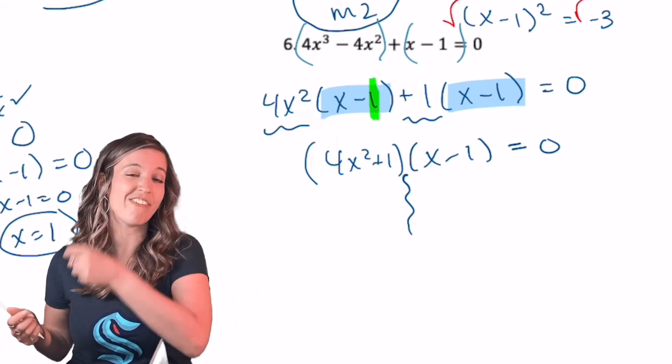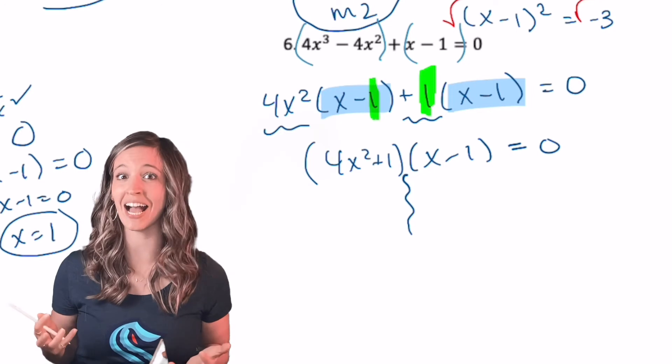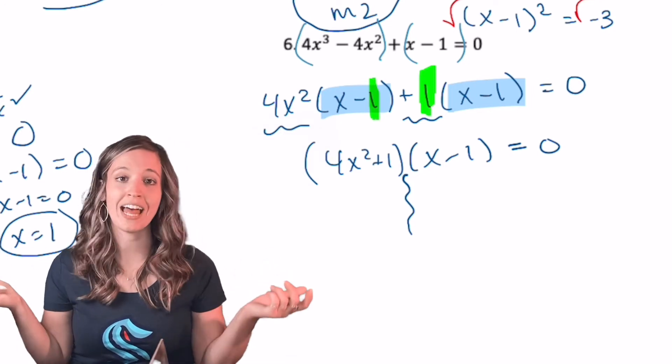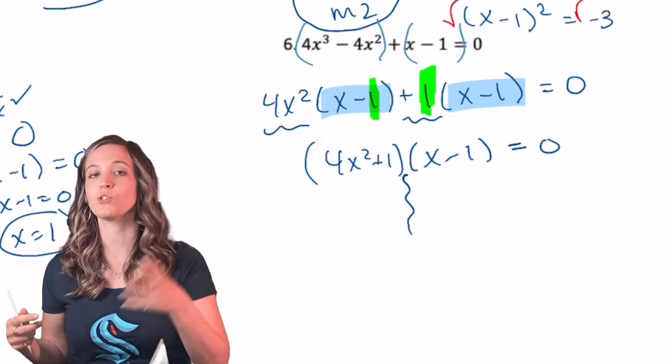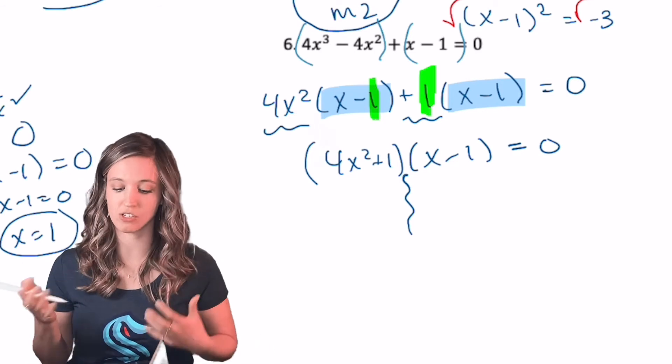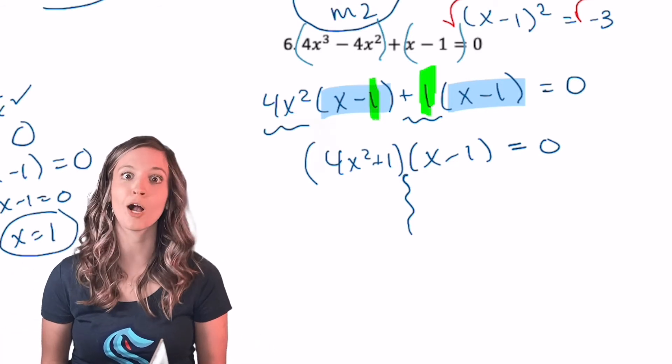And then in that second group, I had X minus one. Well, what do they have in common? A one. So I factored out a one. We need to factor something else so that we've saved that spot. So now they have that X minus one factor in common. So I can pull that out. And my leftover pieces are four X squared plus one. Now that it's factored, zero product property.